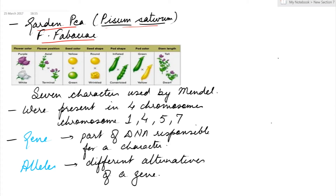The seven characters which Mendel used were flower color, flower position, seed color, seed shape, pod shape, pod color, and stem length. These seven characters that Mendel took were actually present in four chromosomes — chromosome number 1, 4, 5, and 7.